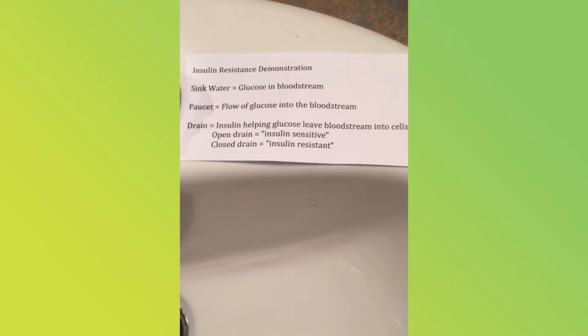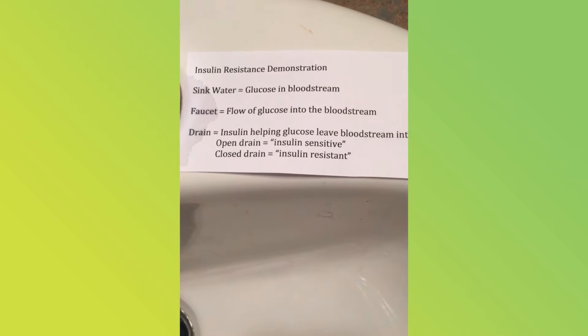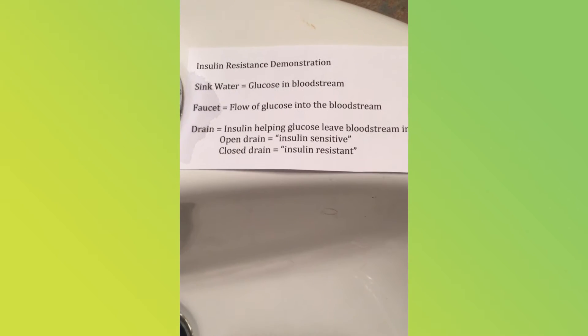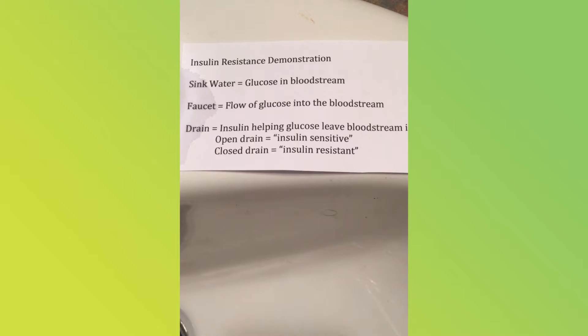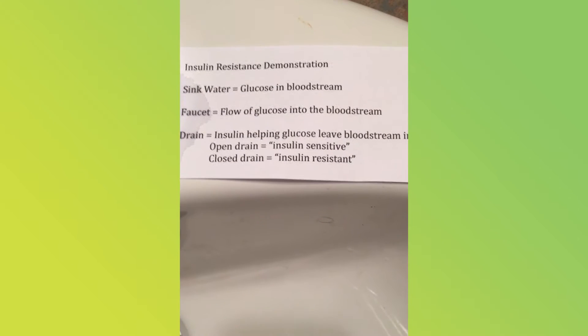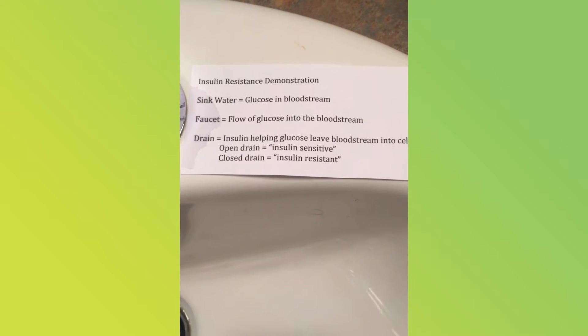Insulin resistance demonstration. The sink water is the level of glucose in the bloodstream. The faucet is the flow of glucose into the bloodstream. The drain is insulin helping the glucose leave the bloodstream and go into the cells. An open drain is being insulin sensitive; a closed drain is being insulin resistant.